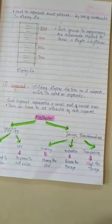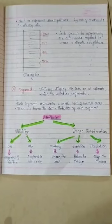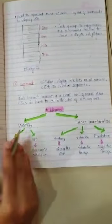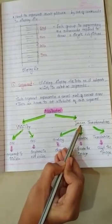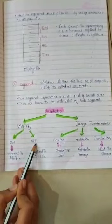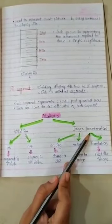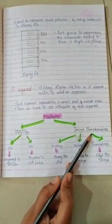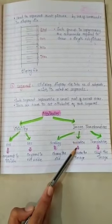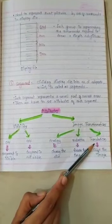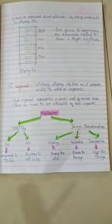Now, what attributes are required to store a segment? Whenever we are storing a line into the display file, we store two attributes — line and move operations. Similarly, we use different attributes to store objects in segments. The two main attributes are visibility and image transformation. Visibility has two types: on and off. On means the segment is visible to the user; off means it is invisible. For transformation, the basic operations are scaling (changing the size of the object), rotation (rotating the image at some angle), and translation (shifting the image in the x or y direction). These are the two basic operations we store when storing an image into a segment.